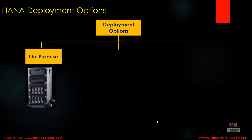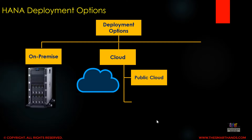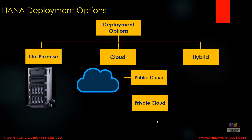The second option is cloud, where we have the data stored in a cloud. Within cloud there are two more options: the first is public cloud and the other is private cloud. Public cloud is where you share the cloud with other customers, whereas private cloud is a totally private and dedicated server set up for you. Then we have hybrid, which is a combination of cloud plus on-premise — some data is on the cloud and some data can be on-premise.